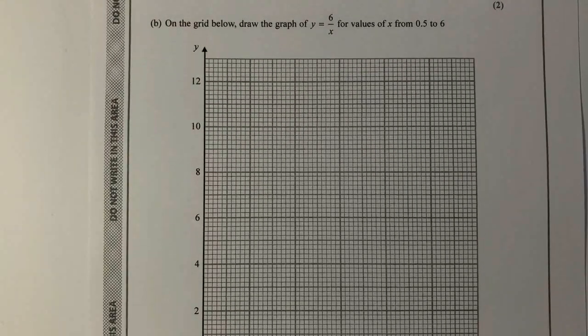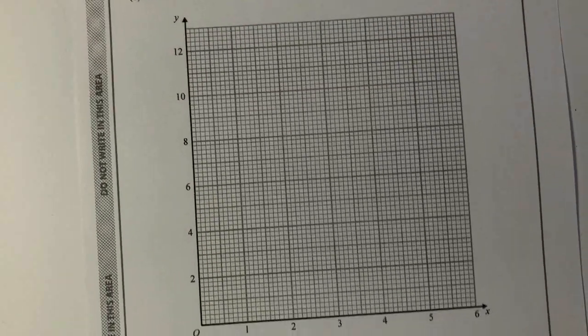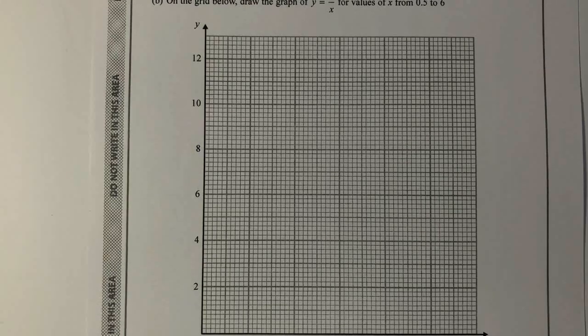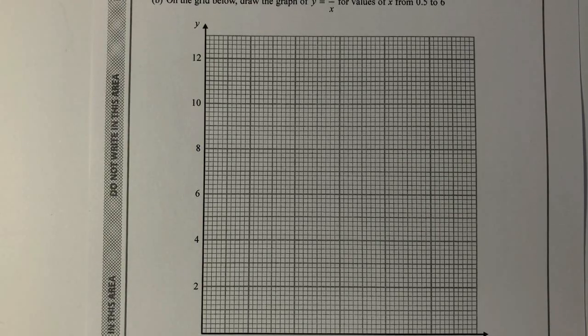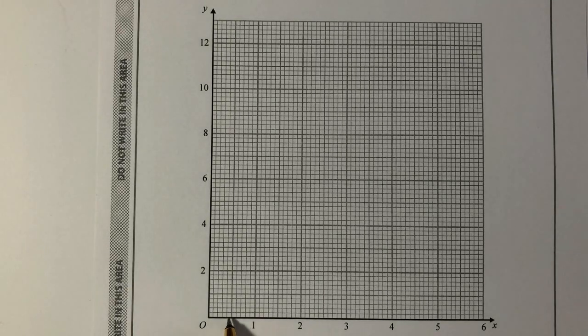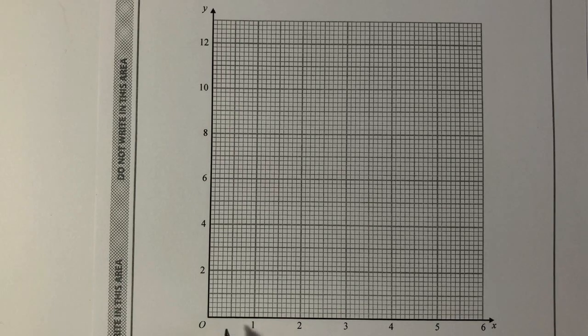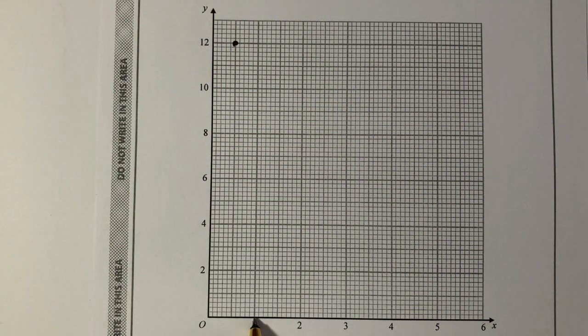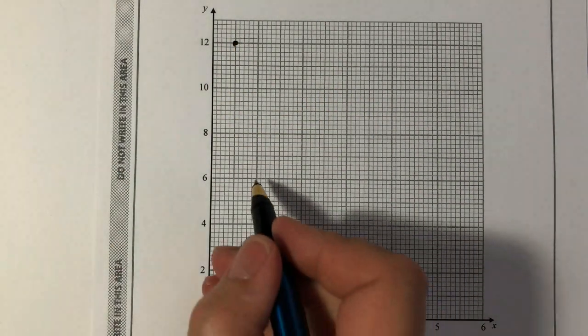Then it says on the grid below, draw the graph for those values. Hopefully I'll be able to do this okay on the video. It's going to be a little bit tricky to see, but I'll read the values out as I'm plotting them. I've got 0.5 right down here at the bottom of the screen there, bottom left hand side, and that's 0.5 to 12. So that's going to go there. And then I've got 1 to 6, that's going to go here.